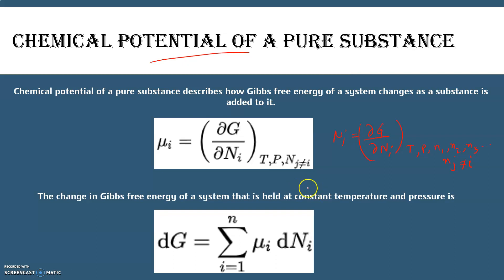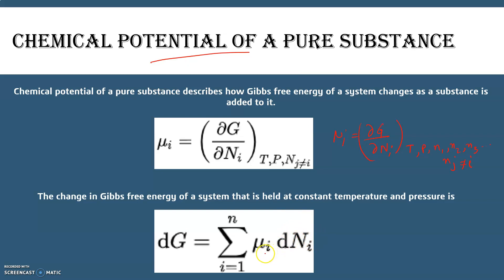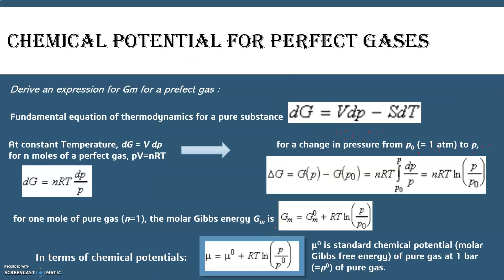From this expression we can also conclude that the change in Gibbs free energy of a system at constant temperature and pressure is given as dG = Σ μᵢ dnᵢ, where μᵢ is the chemical potential of substance i.